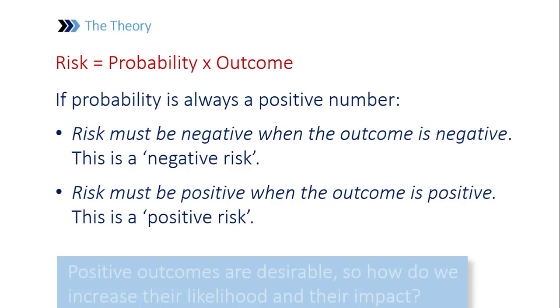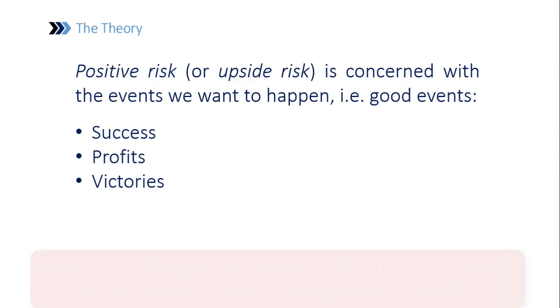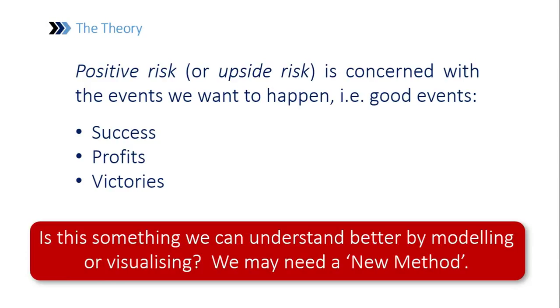Positive outcomes are things that are desirable — they're the things that we want to happen. It's not necessarily the traditional domain of risk management, but I know that there is a lot of interest in this area, and I'm certainly very interested in it, which is why I continued with my thinking. So positive risk, or sometimes called upside risk, is concerned with events that we want to happen. The question is, can we understand this better by modelling it or visualising it? We might need a new method to do this — which is what I call this method that I'm about to show.